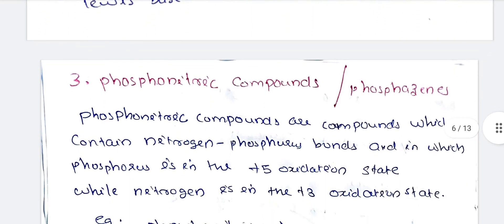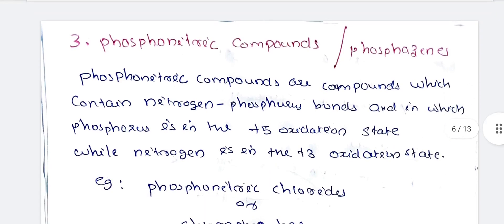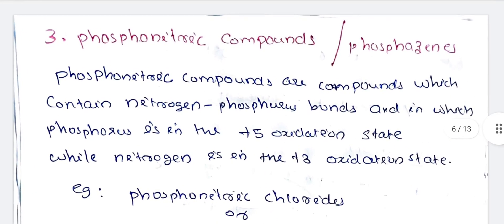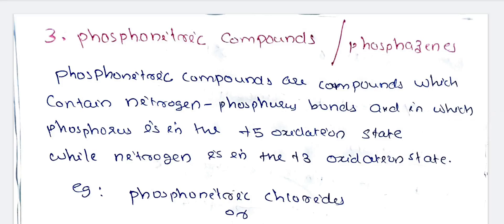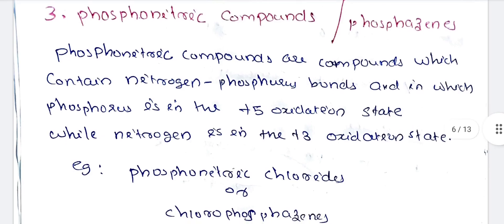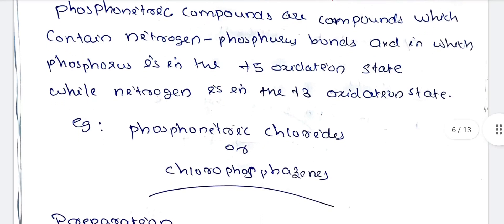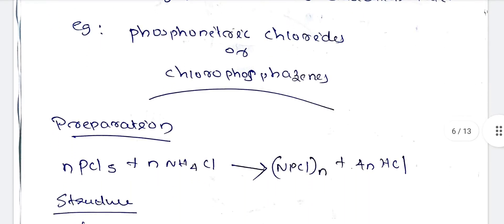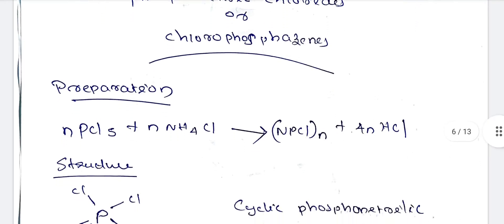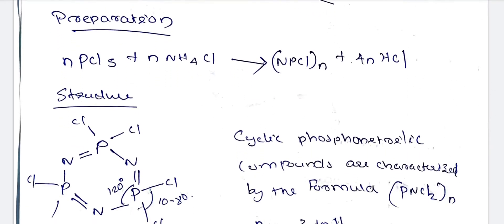The next topic is phosphonitric compounds. Phosphonitric compounds are compounds which contain nitrogen-phosphorus bonds, with phosphorus in the +5 oxidation state and nitrogen in the +3 oxidation state. The preparation involves phosphonitric chloride: PCl5 plus NH4Cl gives (PNCl2)n plus 4NHCl.